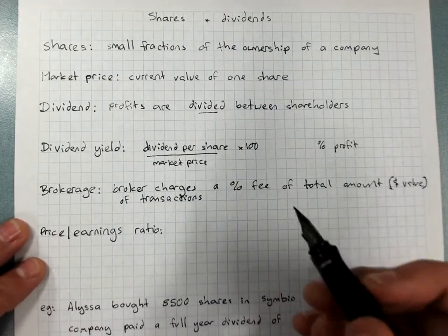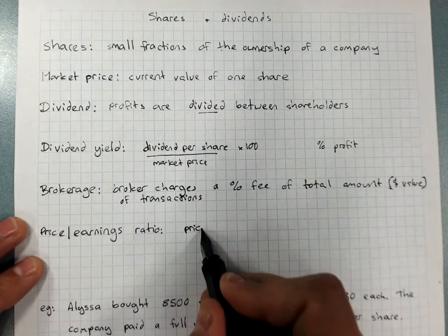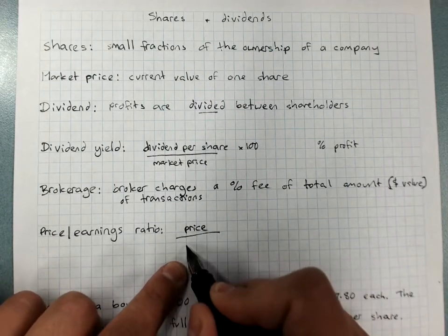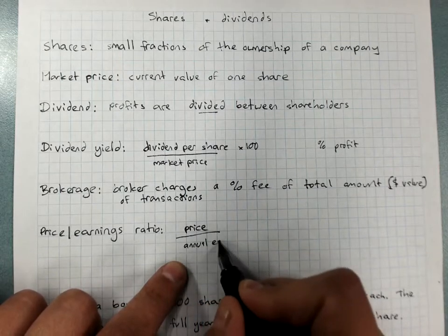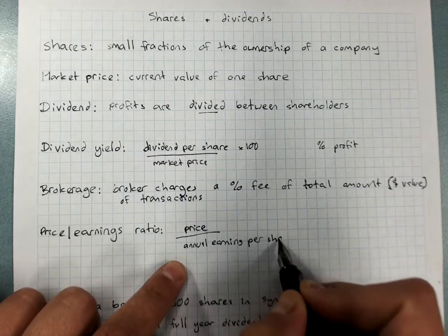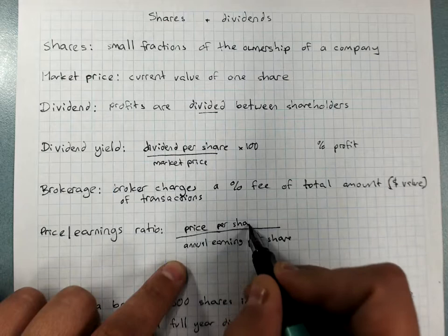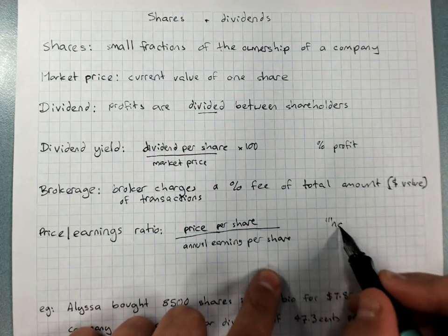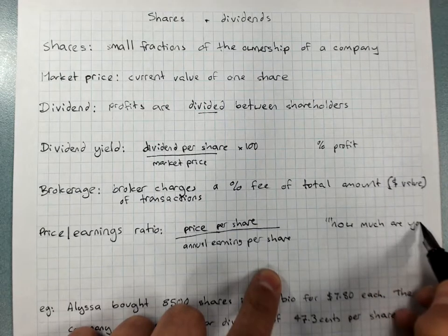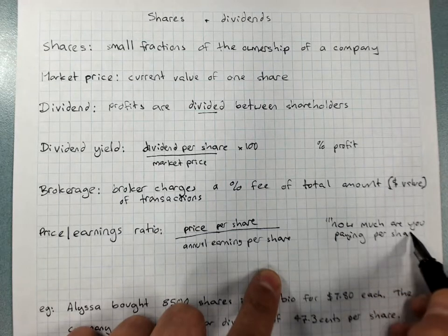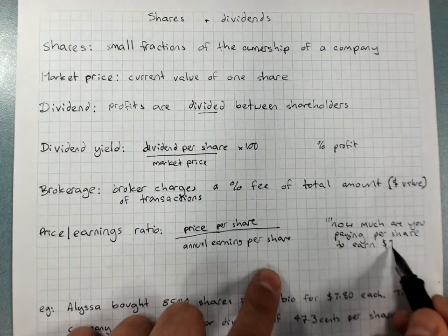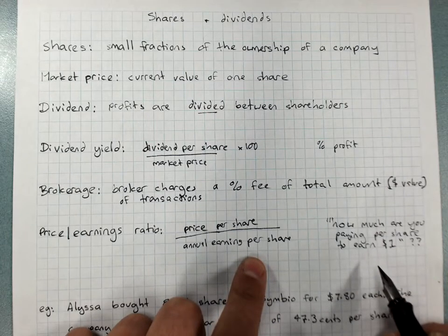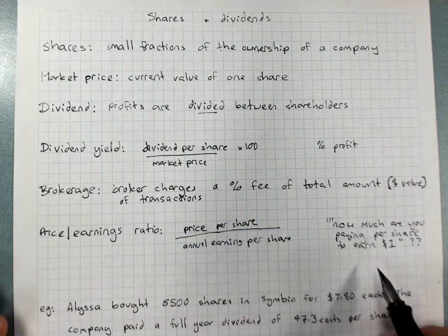And the price to earnings ratio is the price of a share, so the market price, divided by the annual earnings per share. That's right, price per share. Sorry about my messy writing there. So basically this is, how much are you paying per share to earn one dollar? So basically a higher number on this means that you're paying more money to earn a dollar. So it's less good value. Less value for money when you get a higher number on the price to earnings ratio.